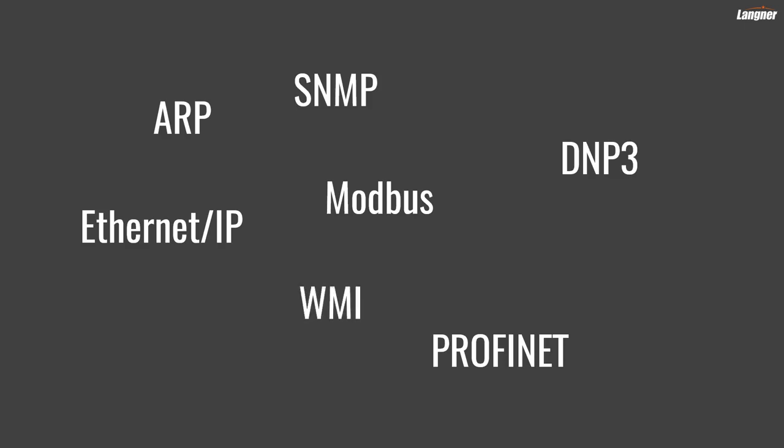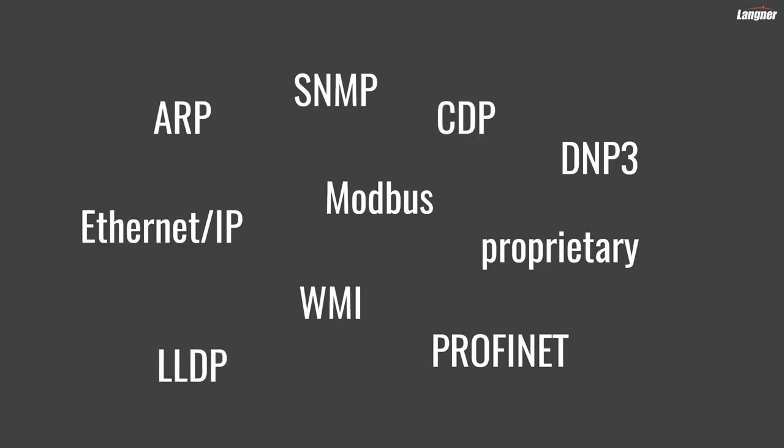For example, SNMP allows you to discover network topology, which is an extremely useful feature you wouldn't want to miss without a very good reason. WMI allows you to accurately enumerate all your operating system versions, application software and security patches. Even proprietary protocols from Siemens, GE and others have specific functions to query metadata, and they are certainly used by the asset discovery products from these vendors. There are even protocols specifically designed for discovering configuration details, such as the Link Layer Discovery Protocol or the Cisco Discovery Protocol.